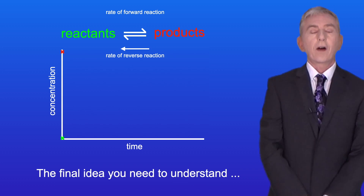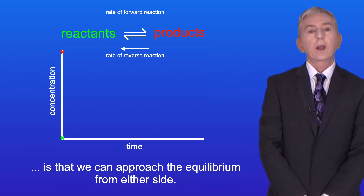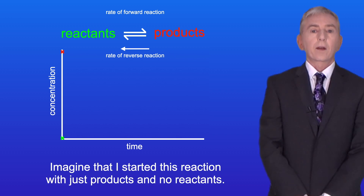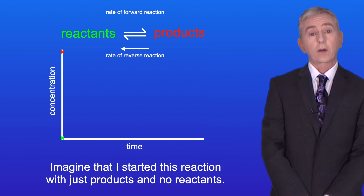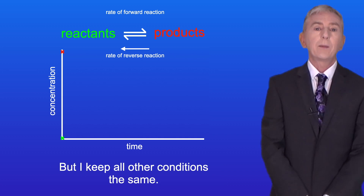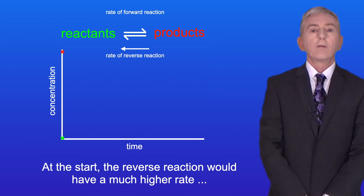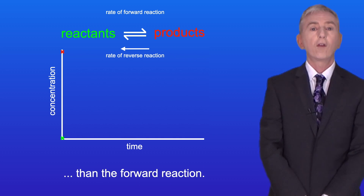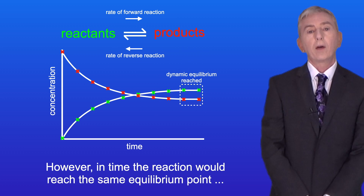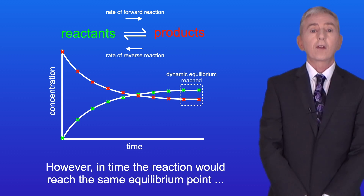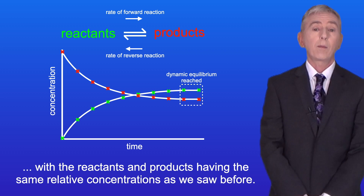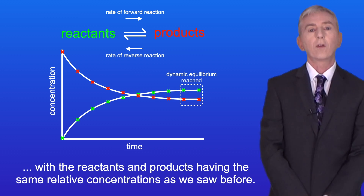The final idea is that we can approach the equilibrium from either side. Imagine starting this reaction with just products and no reactants, keeping all other conditions the same. At the start, the reverse reaction would have a much higher rate than the forward reaction. However, in time, the reaction would reach the same equilibrium point, with the reactants and products having the same relative concentrations as before.